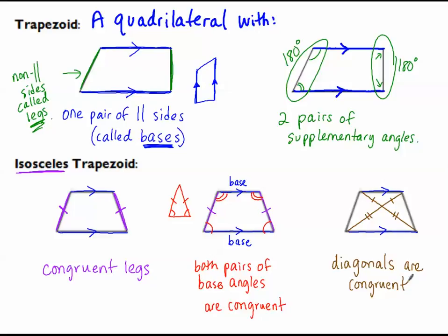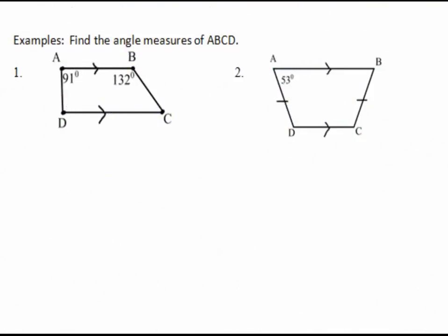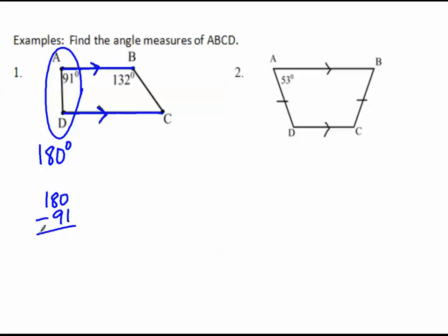Let's look at some examples using these properties of trapezoids and isosceles trapezoids. Find the angle measures of A, B, C, D. I notice I have parallel arrows, so this side is parallel to this side. One angle from one parallel line and one angle from the other must be supplementary — add up to 180. So 180 minus 91 gives us 89 degrees. The measure of angle D equals 89 degrees. Don't forget the degree symbol.